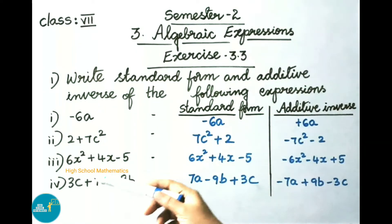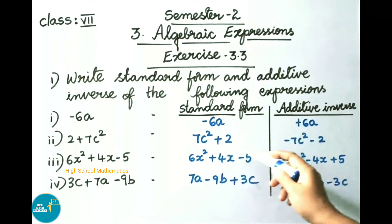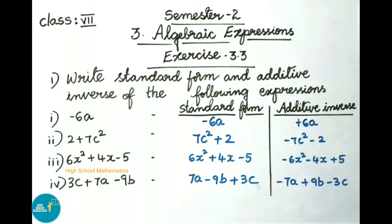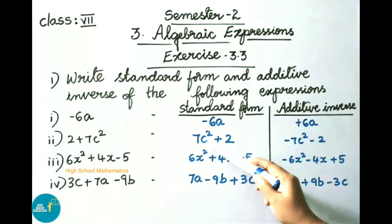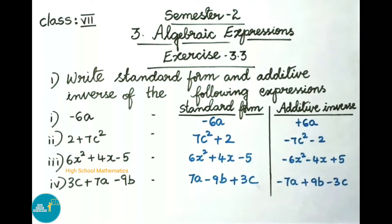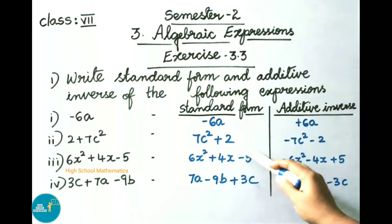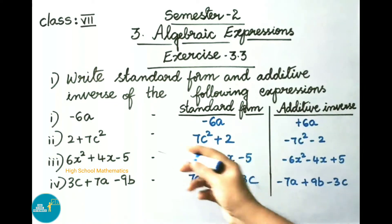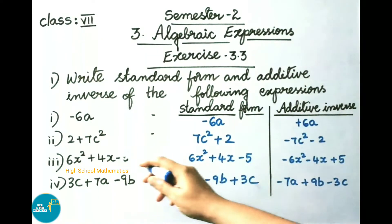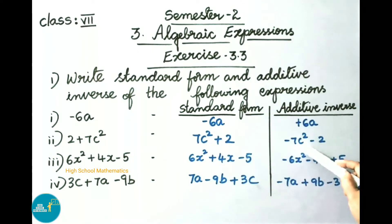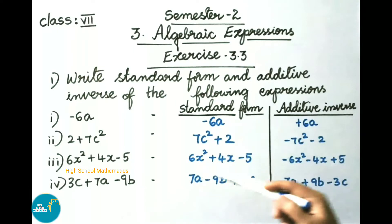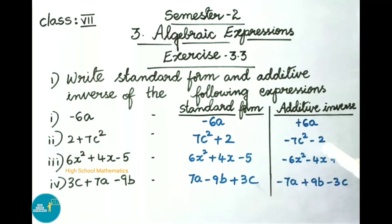See now the second one: 2 plus 7c square. Standard form is 7c square plus 2. In standard form we have to arrange the given expression with exponents of the variables in descending order. The additive inverse of 2 plus 7c square is minus 7c square minus 2.